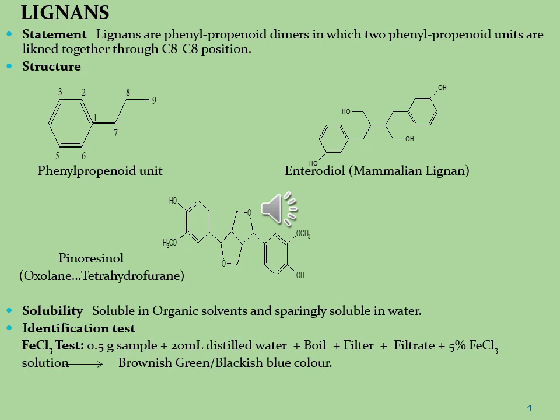Let's see what are the lignans. Lignans are the scant metabolites which are isolated from the wood of plants. Lignans are phenylpropenoid dimers in which two phenylpropenoid units are linked together through carbon-carbon linkage.